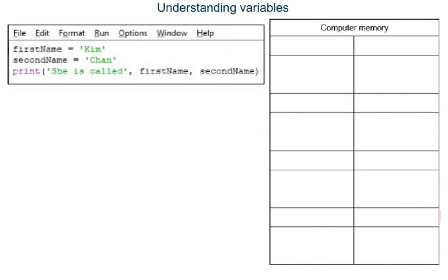We can put more than two things inside the brackets after the instruction print if we use more commas. In line 3 of this program we have two commas allowing us to have three things in the brackets: one, two, three.